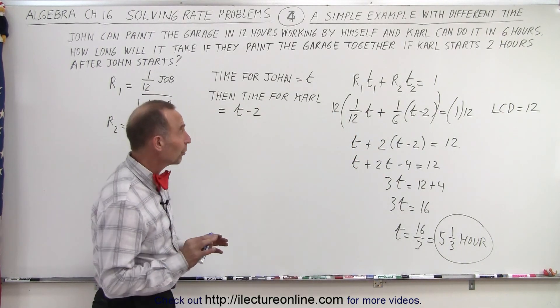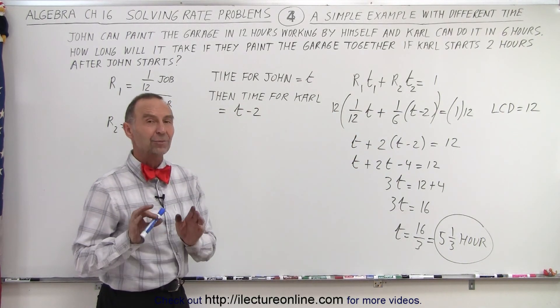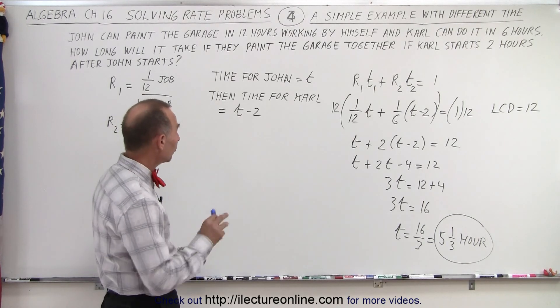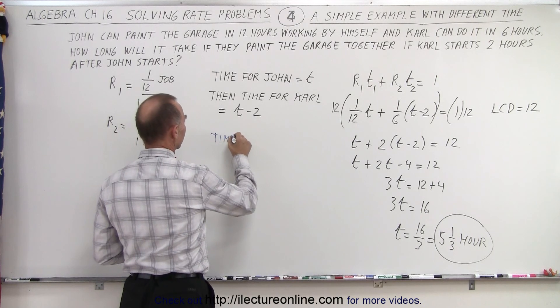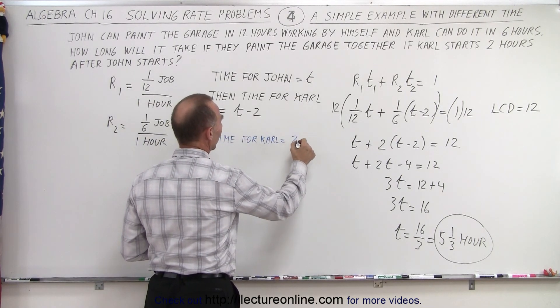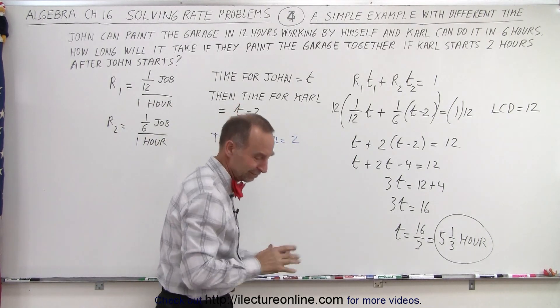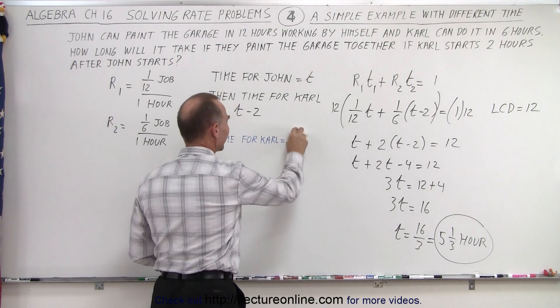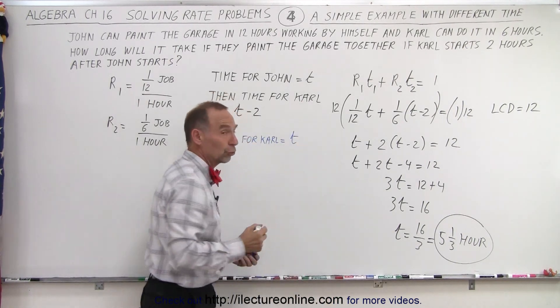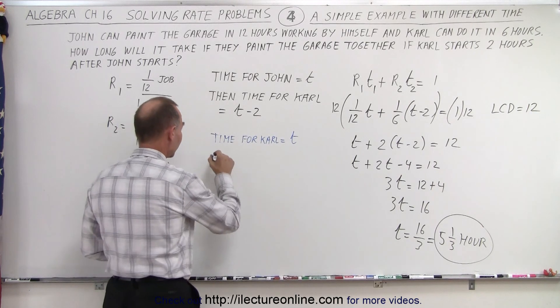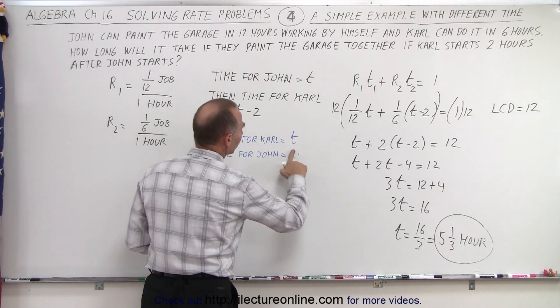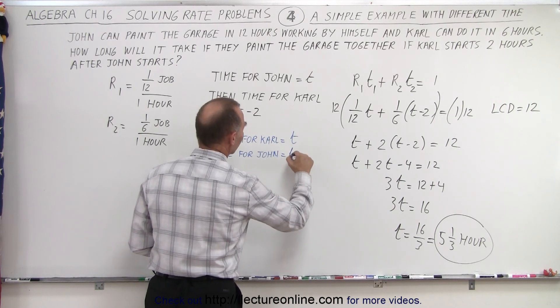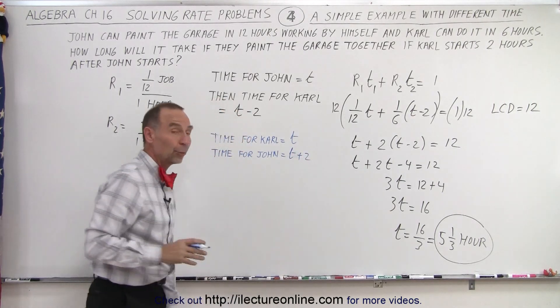Just in case you were wondering, what if we assign the time t to Carl instead of John? So let's say that time for Carl equals t, and so then John would work two hours longer, so time for John would equal t plus 2. Then would we get the same result if we use this? Well, we should, so let's plug it in.